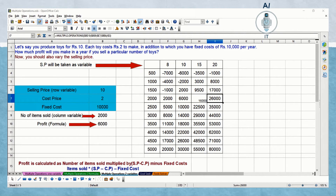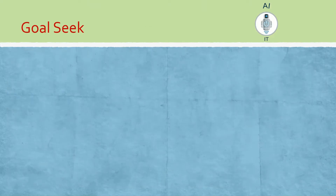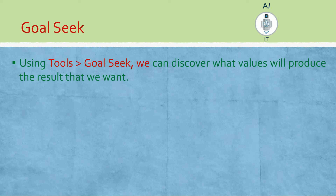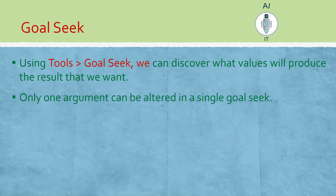The second topic is goal seek. Using Tools > Goal Seek, we can discover what values will produce the result that we want. Simply put, we know the target or final value, but we want to find the possible input values needed to achieve it. Note that only one argument can be altered in goal seek — we cannot have more than one argument.